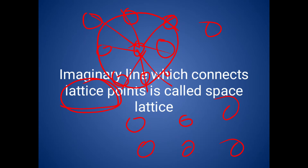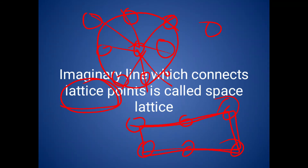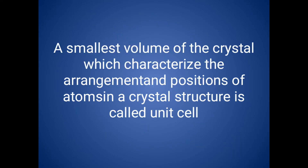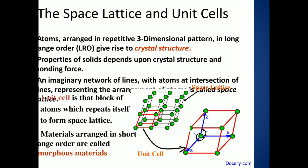If we draw a line connecting all these lattice points inside the body, that imaginary line we call a space lattice. This is the space lattice — the blue balls represent the lattice points.